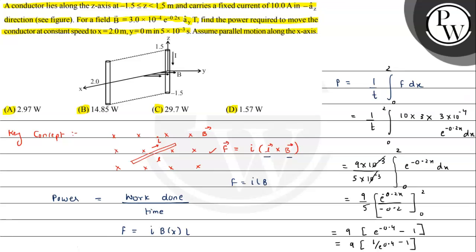On simplification we can say the value, therefore power will be coming out to be 2.97 watt. So this is the answer to the question we are getting which matches option A. I hope you understood the solution, all the best.